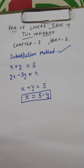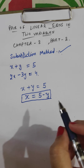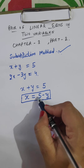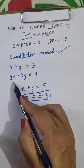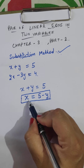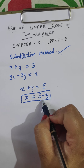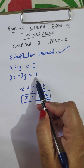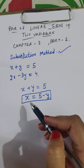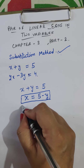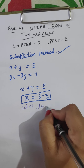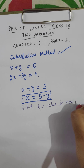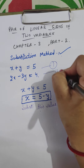Now, the name of the method is substitution method. So we take this value from equation 1 and substitute it into the second equation. We have solved for one variable's value from the simpler equation and will now substitute that value into equation 2.